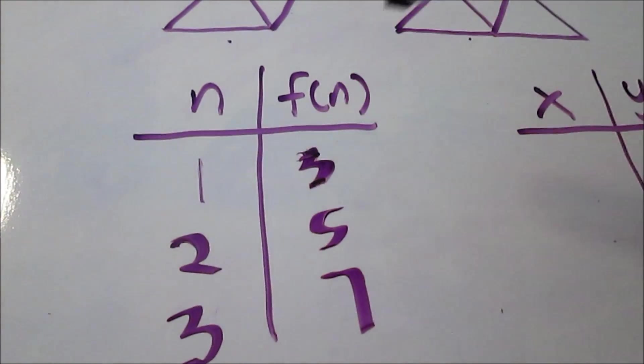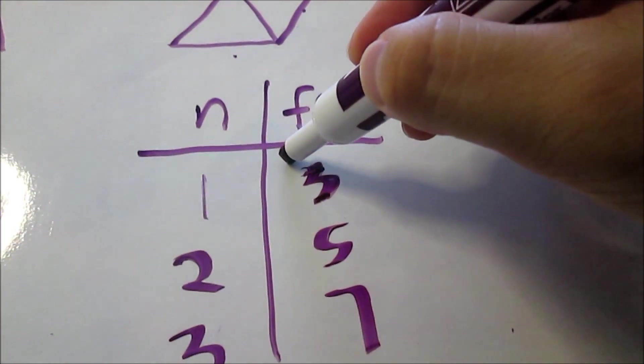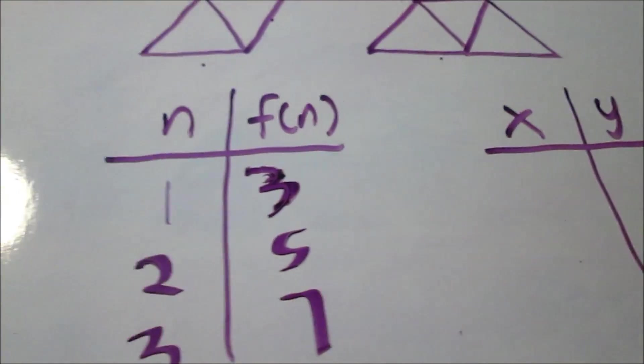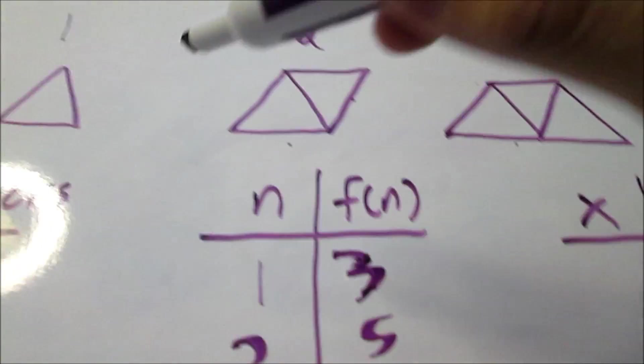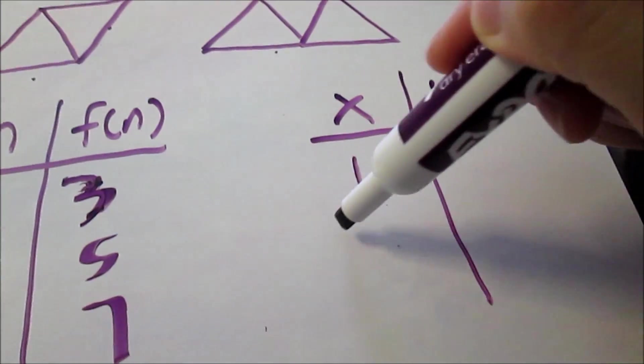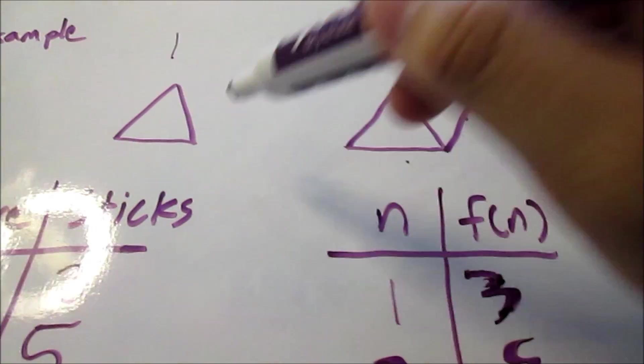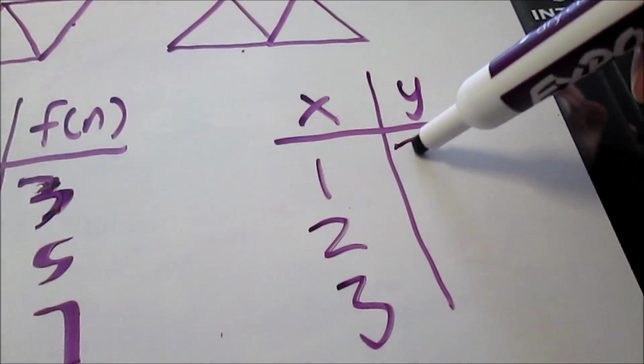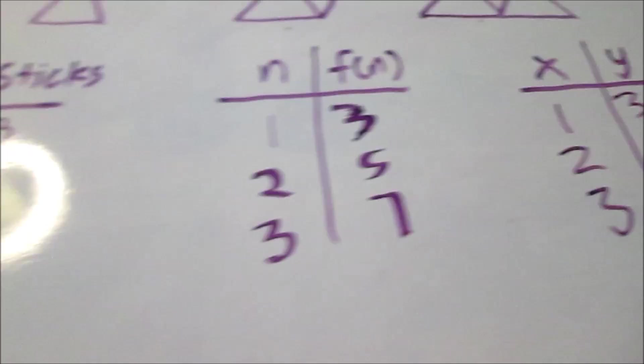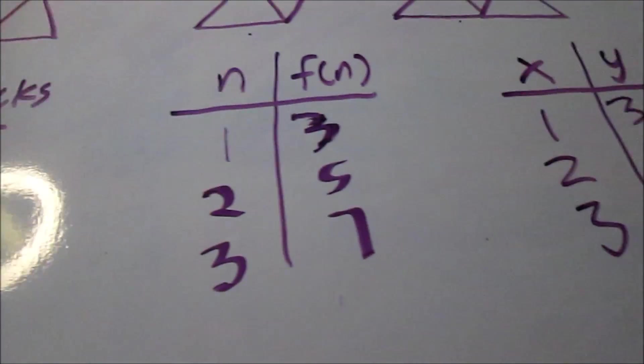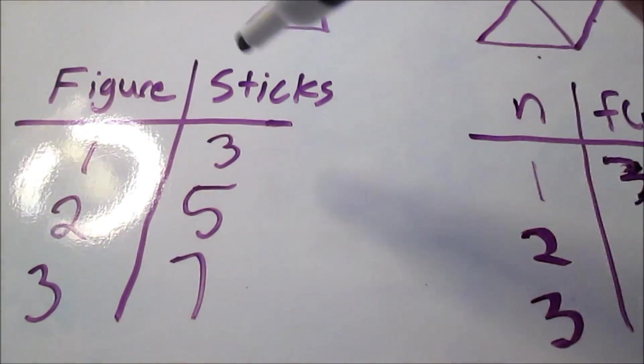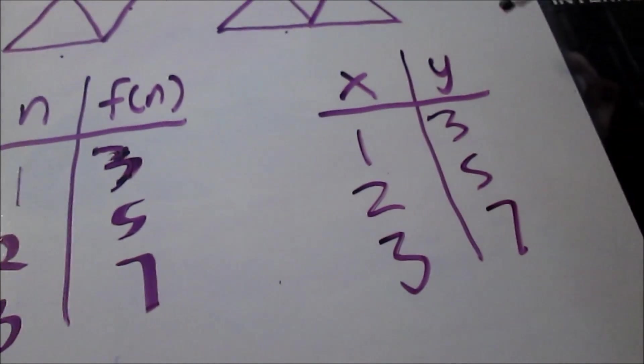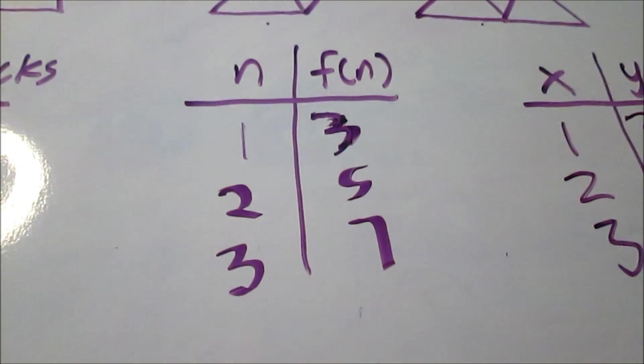Besides this way, I can also write my table using x's and y's, which will be seen in linear equations. x this time would be the figure number, 1, 2, 3. And y would be the number of sticks, 3, 5, 7. It's the exact same table written 3 times using different headings. Instead of figure and sticks, I use these two other examples, but they all are the same thing.